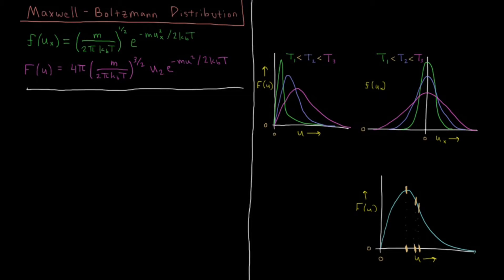In this video we're going to look at the Maxwell-Boltzmann distribution, which tells us about how the speeds of individual particles in a gas are distributed. If we look at the individual components of a gas and how they're distributed, for example velocity u in the x direction, that's going to be some type of Gaussian function as I have on the graph over on the right here.